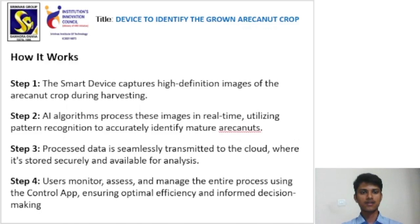The device works on the basis of four steps. In step one, the smart device captures high definition images of the arachinate crop during harvesting. In step two, an AI algorithm processes images in real-time, utilizing pattern recognition to accurately identify mature and ready-to-harvest crops.